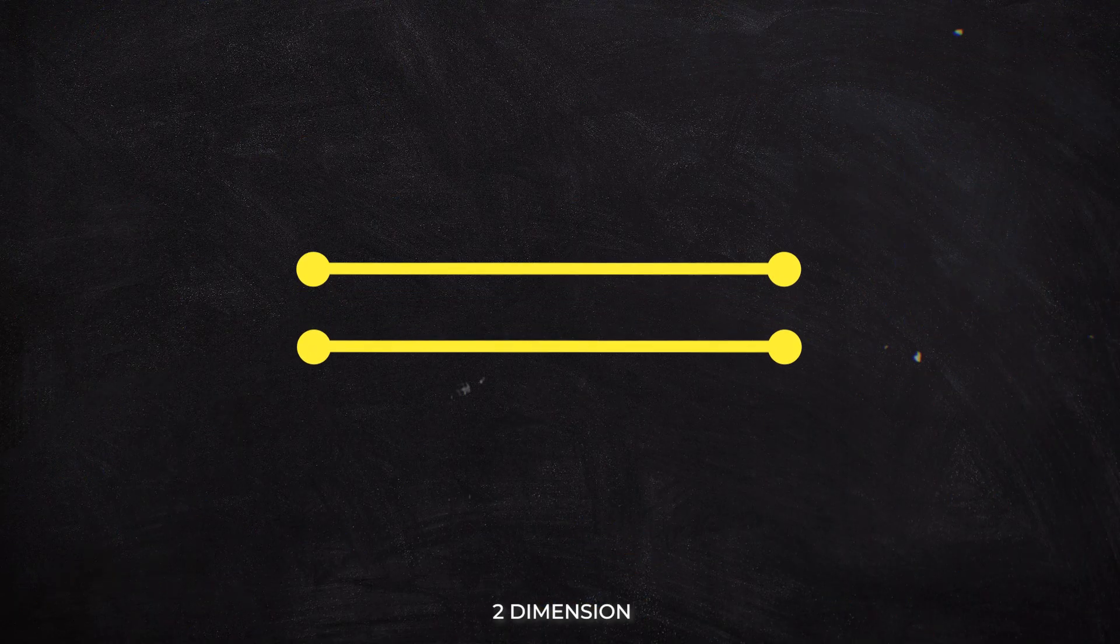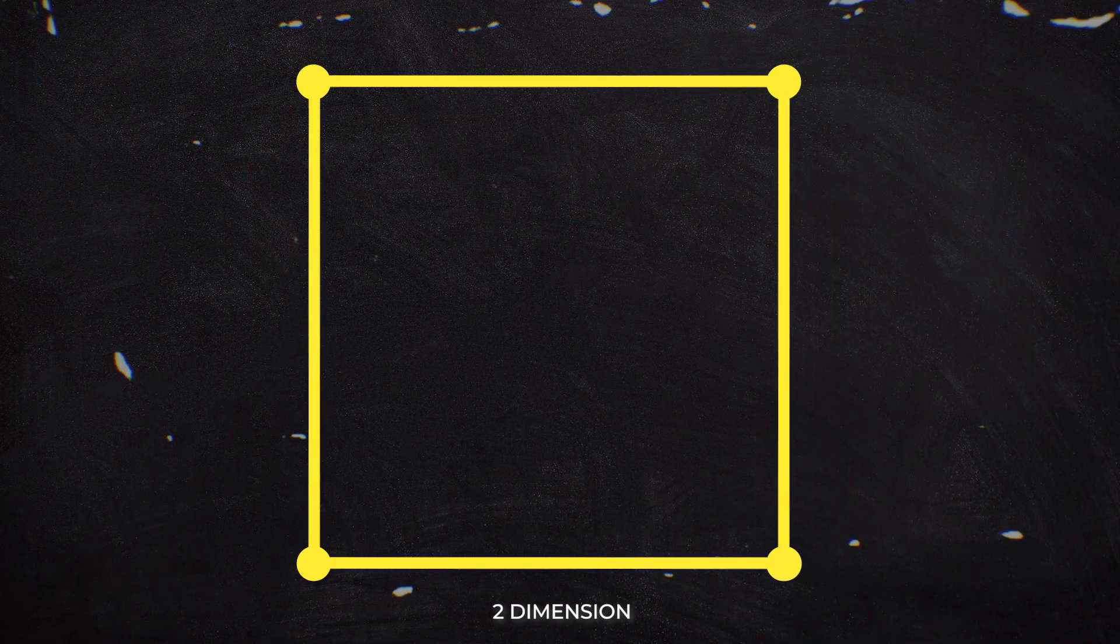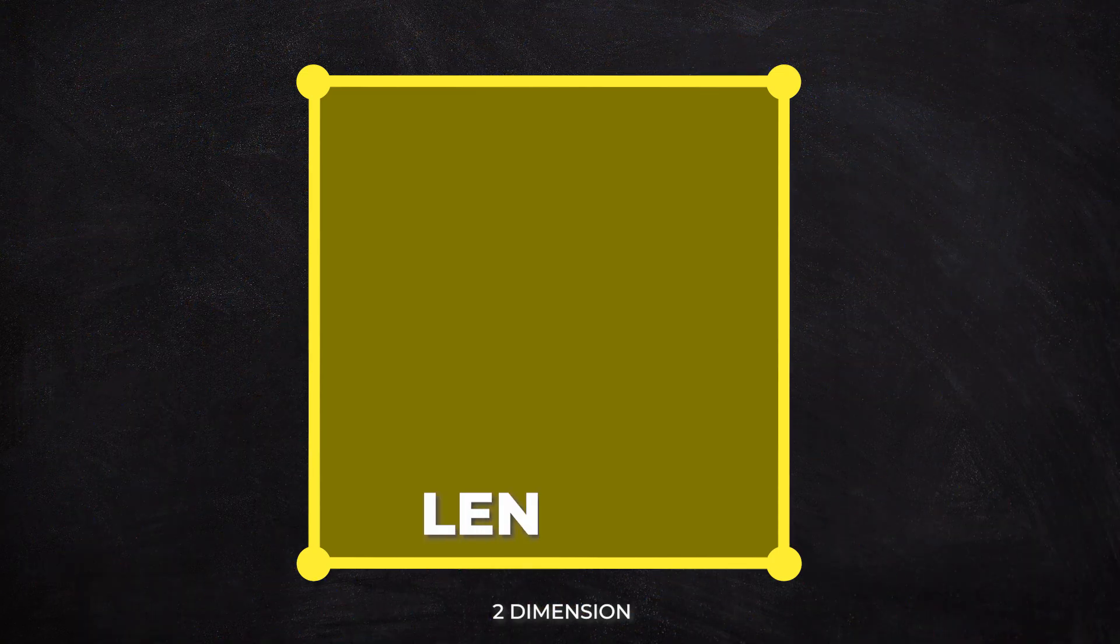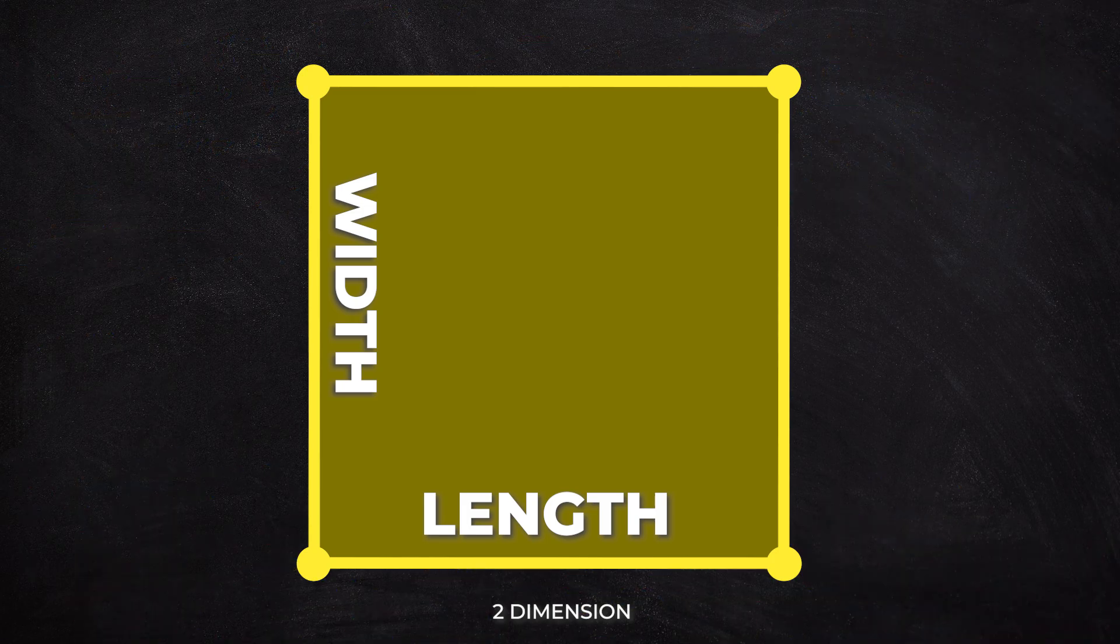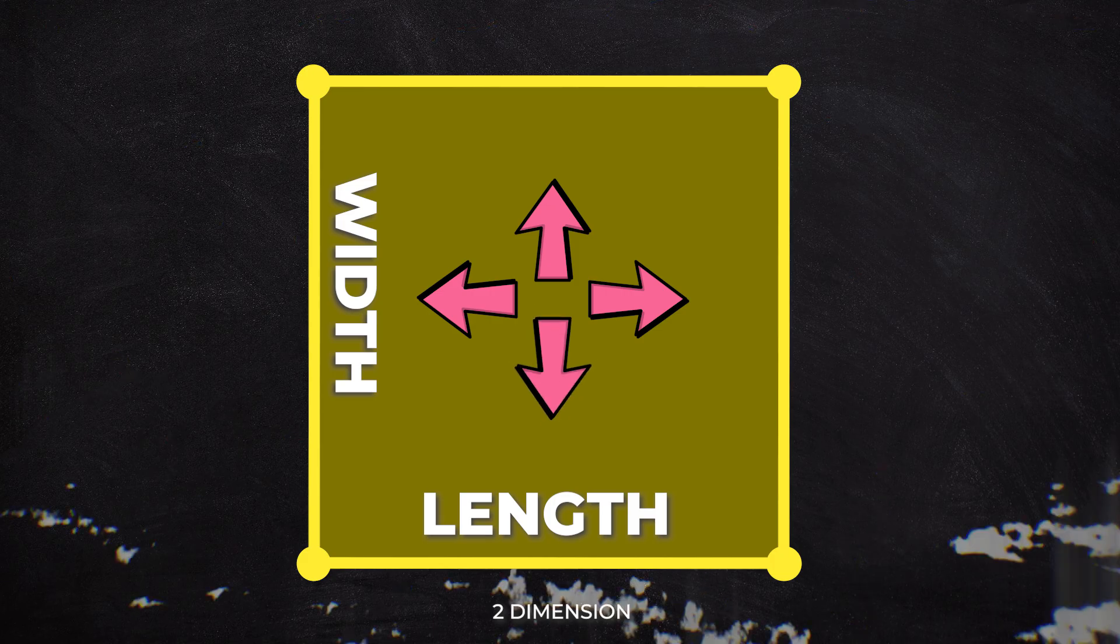The second dimension is a square. To make a square, take two lines and move them apart at right angles in the second dimension and join the matching ends of the lines together with other lines. Now, this flat shape has only two dimensions, length and width. Here, we have four directions, left, right, forward and backward.